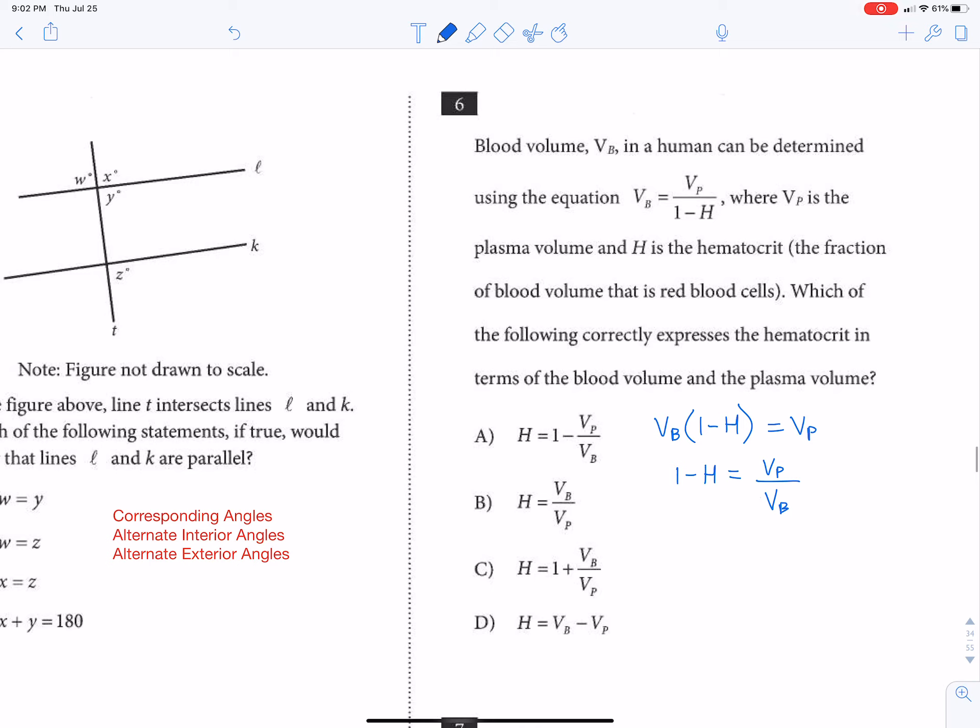So then what I want to do is I'm going to subtract one, and I want to get negative h equals vp over vb minus one. But notice I still have this negative.